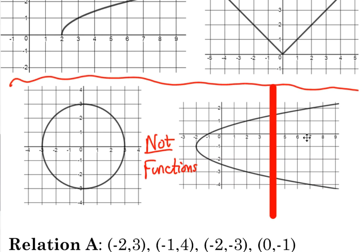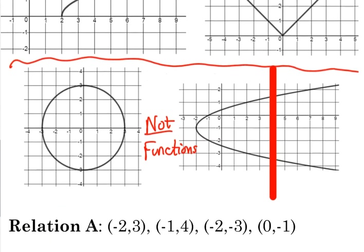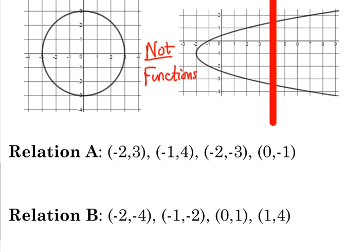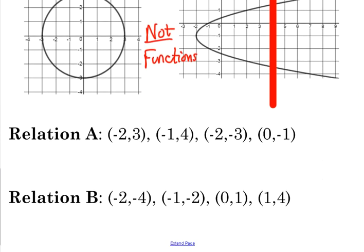So that should be kind of the math one review. But what we're going to look at with math three is, what if they don't give you a graph? What if they just give you a set of points? And you've got to decide, is this set of points simply a relation, or does it pass the function test and it is an actual function? So let's look at relation A here.